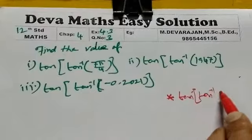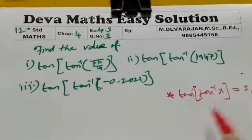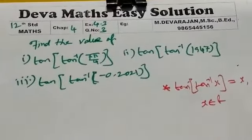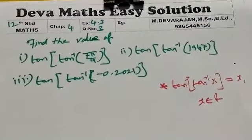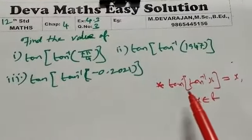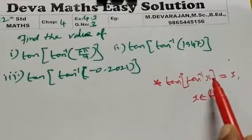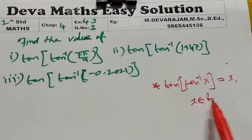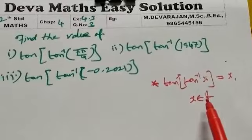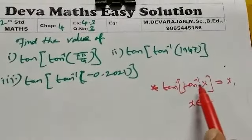The property is: tan inverse of tan of x equals x, where x is any real number. Tan inverse of tan of x equals x for any real number x.